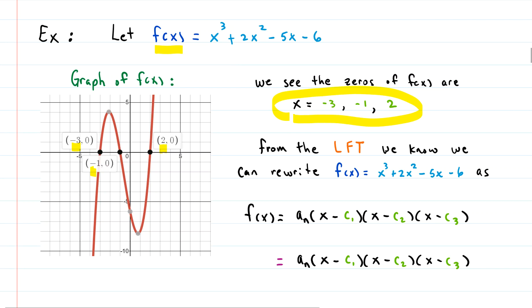So by the Linear Factorization Theorem, we know that we can rewrite our polynomial f as all of the roots multiplied together, and then our leading coefficient out in front. So let's put those in right now. What is our